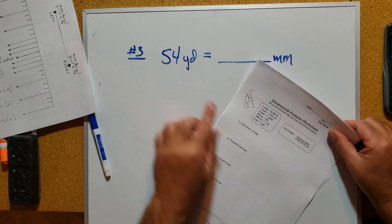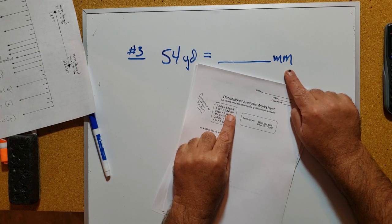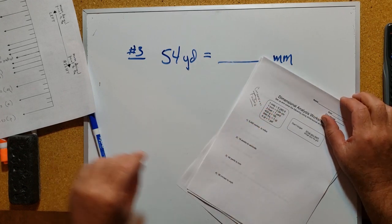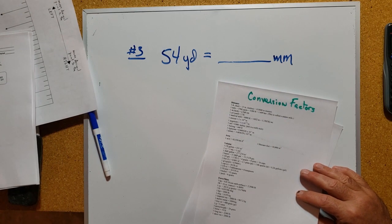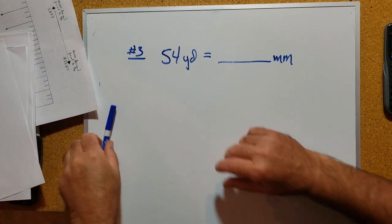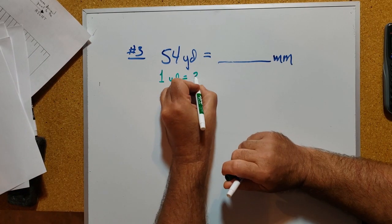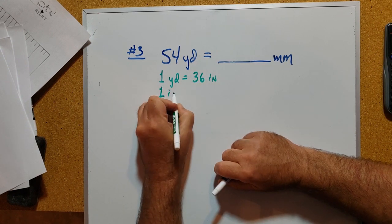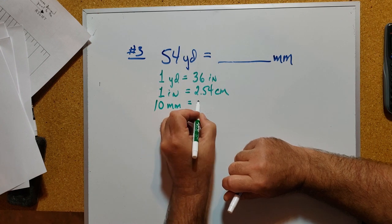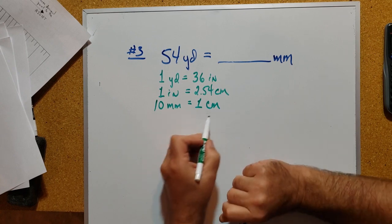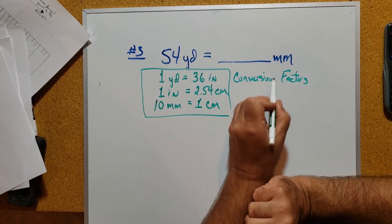So as a strategy, if I go from yards to inches, then I could go inches to centimeters, and from centimeters I could go to millimeters. How do I get from yards to inches? Well, if you're familiar with these measurements, there are three feet in a yard and 12 inches in a foot, so there's got to be 36 inches in a yard. Let's just write that down: one yard equals 36 inches, one inch equals 2.54 centimeters, and 10 millimeters is the same as one centimeter. These are going to be our conversion factors.